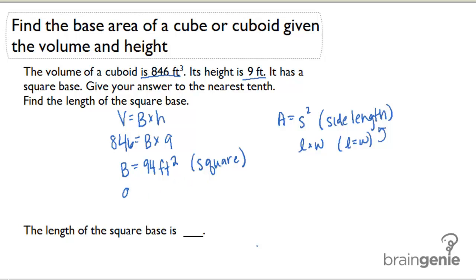So if we're trying to find the dimensions of the square, we would have 94 equals S squared. And if I want to solve this, I'm looking for a value for S that when multiplied by itself gives us 94. Since 94 is not a perfect square, I know that my answer is going to have a decimal. So if I use my calculator and I do S equals the square root of 94, I get an answer approximately 9.695. And because the answer told me to round to the nearest tenth, I'm going to round that to be approximately 9.7 feet. So each side of my square base is approximately 9.7 feet.